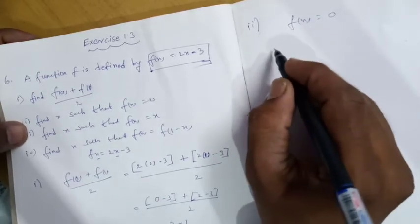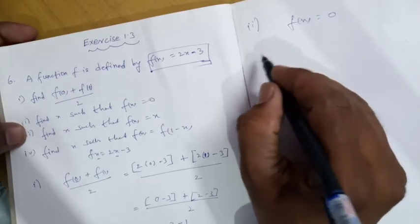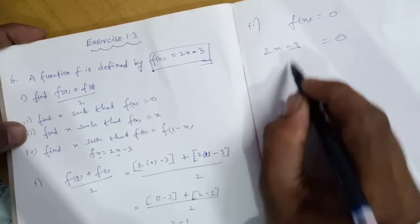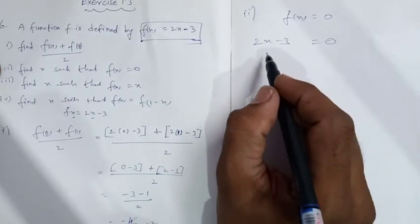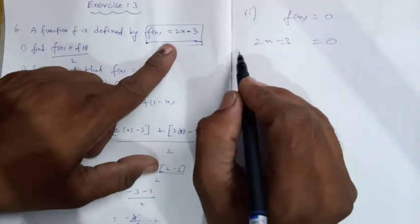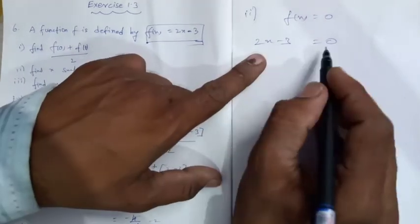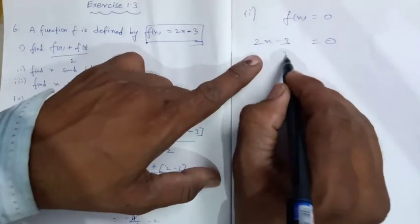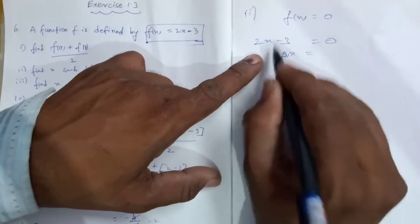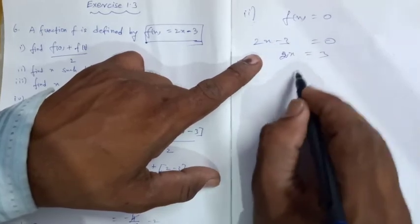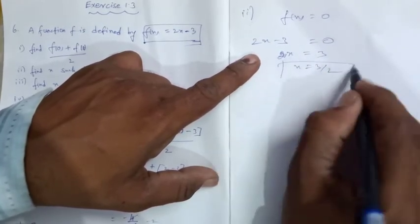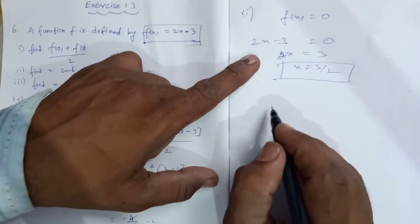Part 2: f(x) = 0. Substitute: 2x minus 3 = 0, so 2x = 3, therefore x = 3 by 2. That's all.